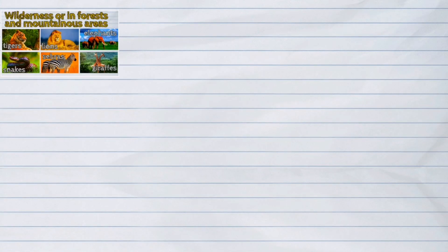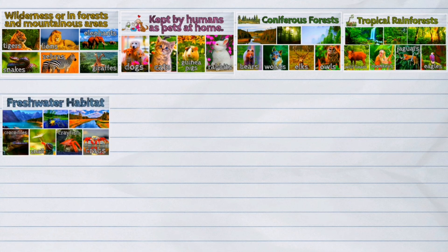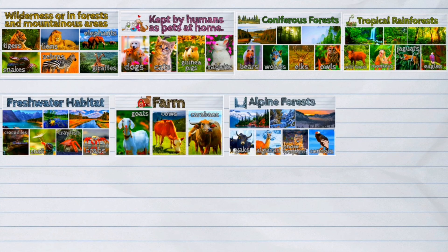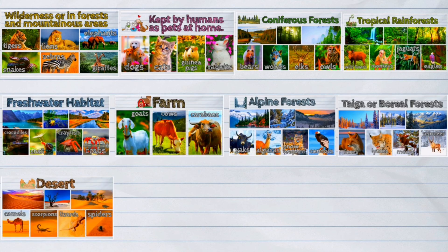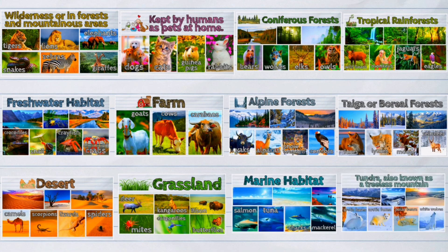All animals need a habitat in order to survive. It is where an organism can find food, shelter, protection, and mates for reproduction. It is very important that we, humans, should also take good care of all the habitats because it is the only way to enrich our planet.